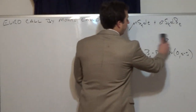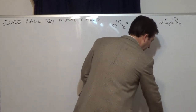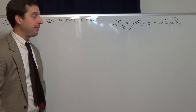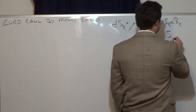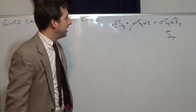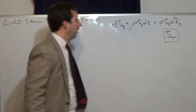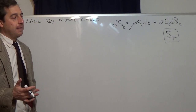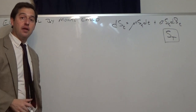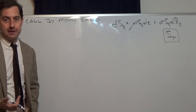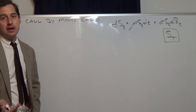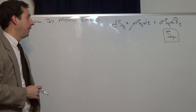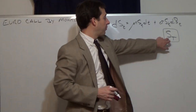The first thing we need to do to value an option by Monte Carlo is know the distribution of the stock price at time T — big T being the expiration of the option. Because this is a European option, not an American option, we can't exercise early, so we don't particularly care about the path the stock takes — just what it is at time T. If we were doing a path-dependent option like an Asian option, we would need to simulate full paths, but here we just need the price at time T.